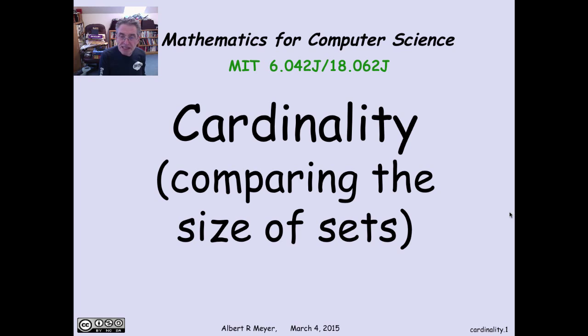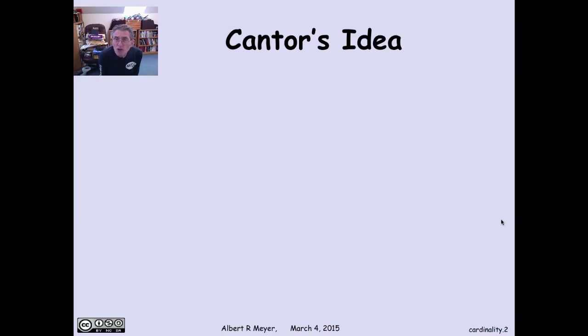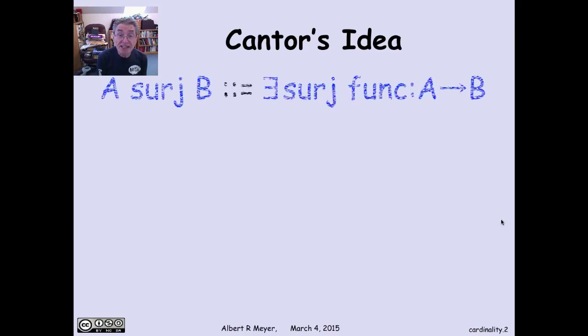So, there was this mathematician in the 19th century, late 19th century, named Cantor, who was actually working on Fourier series. And he discovered that the kind of series that he was working with diverged at infinitely many places, which sounds kind of bad. But he wanted to get across the idea that it didn't diverge at very many infinite places. And that led him to this idea of comparing the sizes of infinite sets. So, this is Cantor's idea.